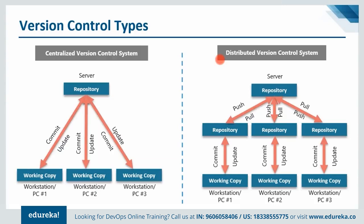Now let's talk about the distributed version control system. These systems do not necessarily rely on a central server to store all versions. In distributed version control systems, every contributor has a local copy or clone of the main repository — everyone maintains a local repository containing the files and metadata present in the main repository. They can update their local repositories with new data from the central server using the pull operation, and affect changes to the main repository using the push operation.